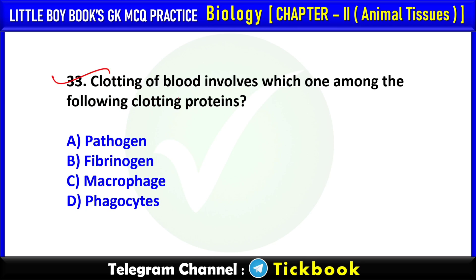Q33. Clotting of blood involves which one of the following clotting proteins? Option number B: Fibrinogen.